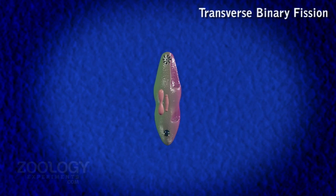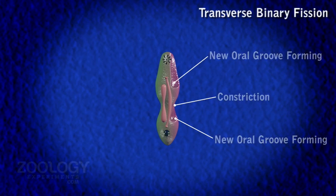Micronucleus first increases slightly in size. This is followed by separation of chromatids and elongation of the micronucleus.